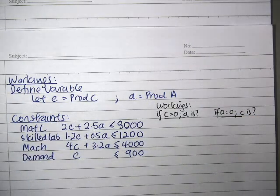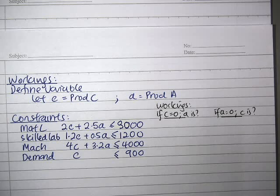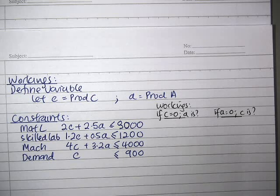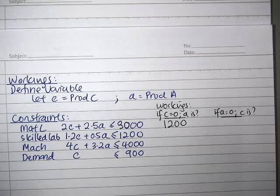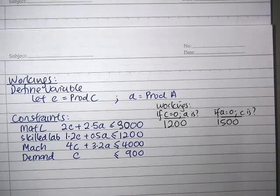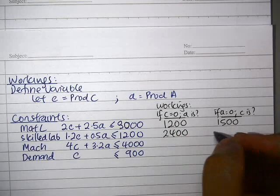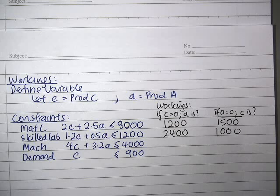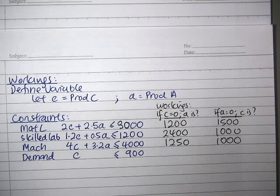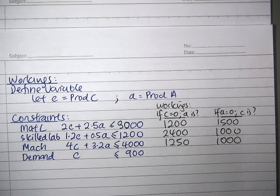Just calculate that. If C equals 0, I'm sure you know what to do. Just do the calculation. So A would be 1200, 1500, 2400, 1000, 1250, 1000.